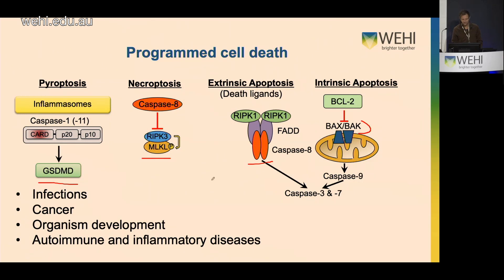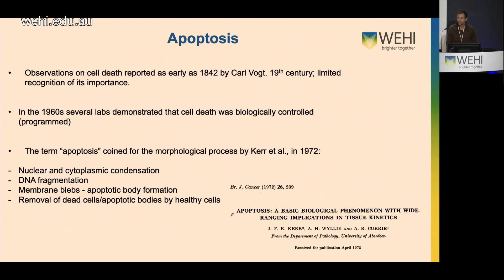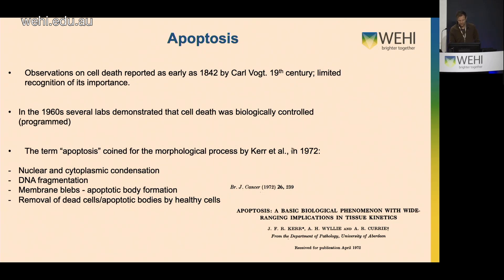Over the last 50 years, a lot of work into programmed cell death has identified its key roles in infections, cancer development, and autoimmune inflammatory diseases. Observations on cell death were reported quite early, around 1842, but there was limited recognition of its importance. In the 1960s, several labs demonstrated that cell death was biologically controlled and not just the result of gross physical insults. Then in 1972 there was a key paper from John Kerr, Wyllie, and Currie, which came out of Queensland University.